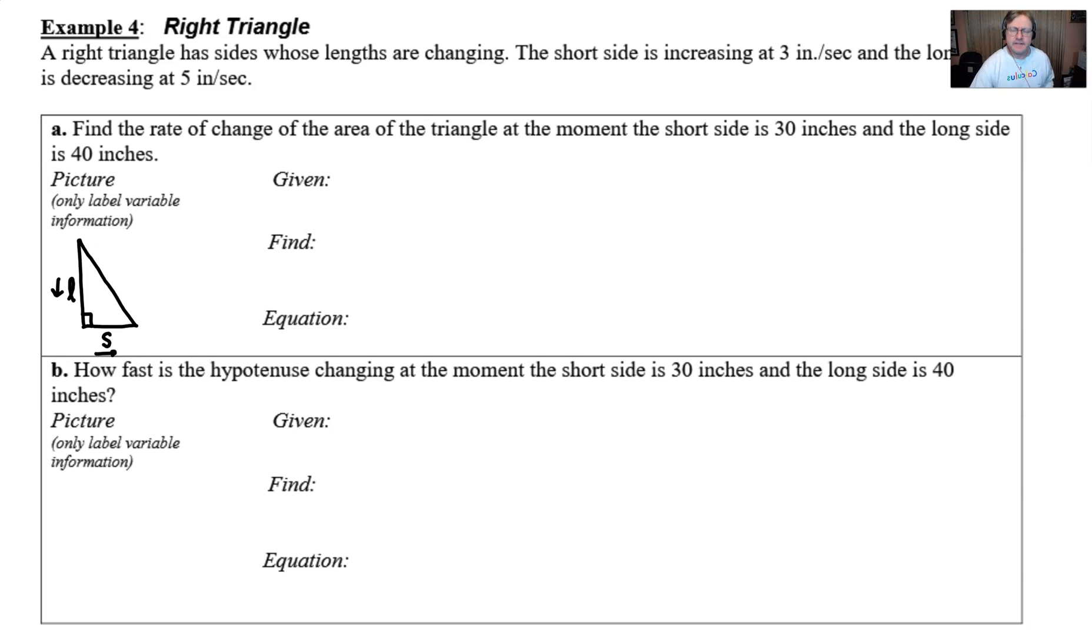As far as the given, what I like to put in the given is always the rates that are provided. In this problem we see that we have short side increasing at a rate of 3, so I will call that ds/dt. And then I've got the long side decreasing at a rate of 5, so that means that the derivative of L with respect to time would be negative 5. I cannot emphasize enough how important it is to put that negative in there. What is it that we're trying to find? Find the rate of change of the area, so that would be the derivative of the area A. I want to find this dA/dt very specifically when the short side is 30 and the long side is 40.